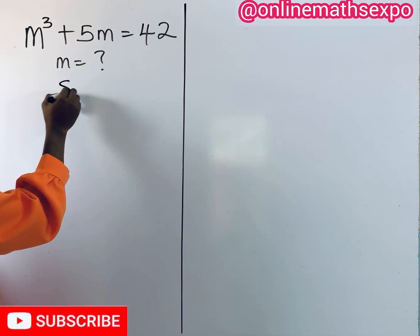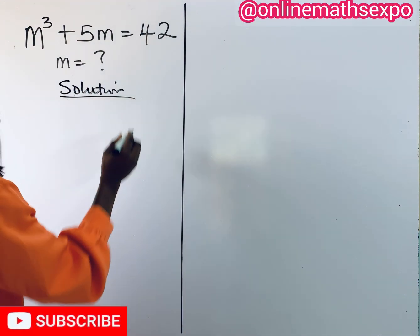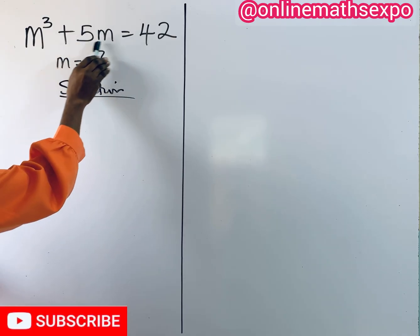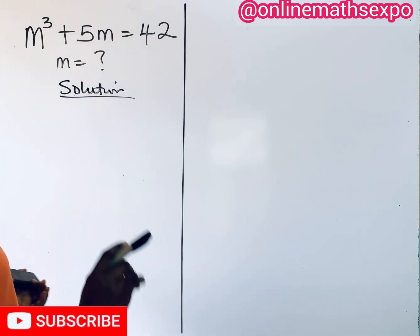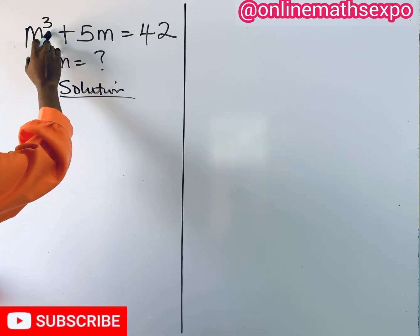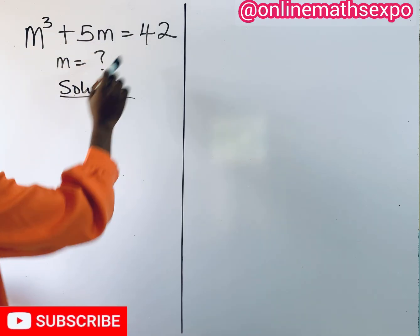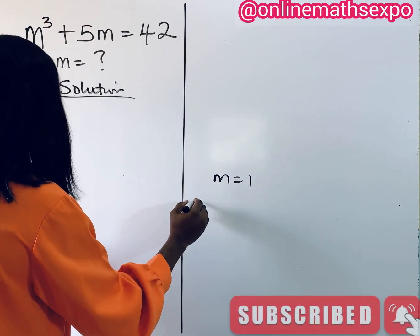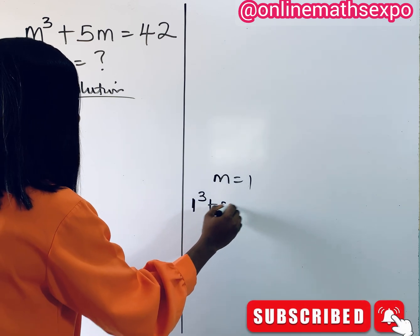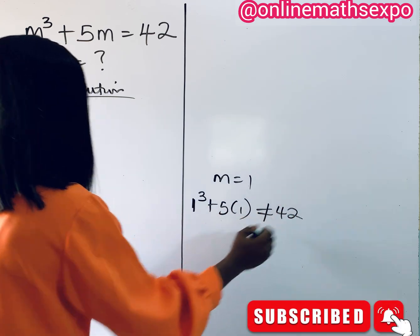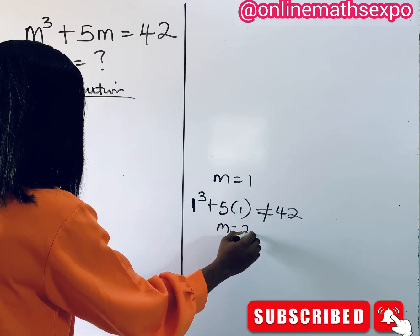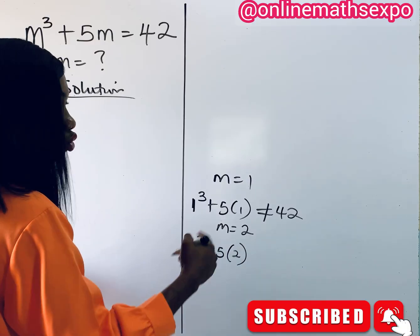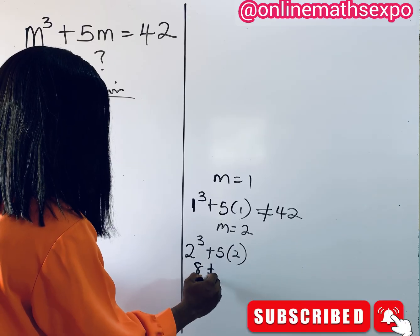Let me show you how to do it. We begin with the solution. Observe that on the right side we have 42, and on the left side we have m³ plus 5m. We ask ourselves: is there any number we can cube and then multiply by 5 such that when we add them together it gives us 42? Let's take m equal to 1: we get 1³ plus 5 times 1. That is not close to 42. Now try m as 2: 2³ plus 5 times 2 gives us 8 plus 10 which is 18 — not equal to 42 either.